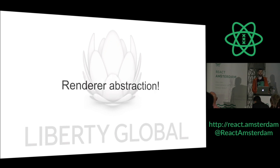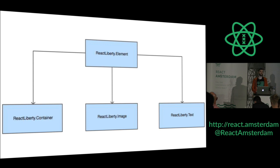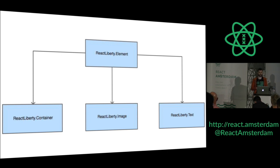So how to achieve this flexibility? By abstracting the renderer. And it's easy to achieve by implementing just three kinds of nodes: container, image, and text node. Once you have them implemented in WebGL, DOM, Canvas, or SVG, you can combine them and make different kinds of applications, still keeping all your business logic behind these visual abstractions.